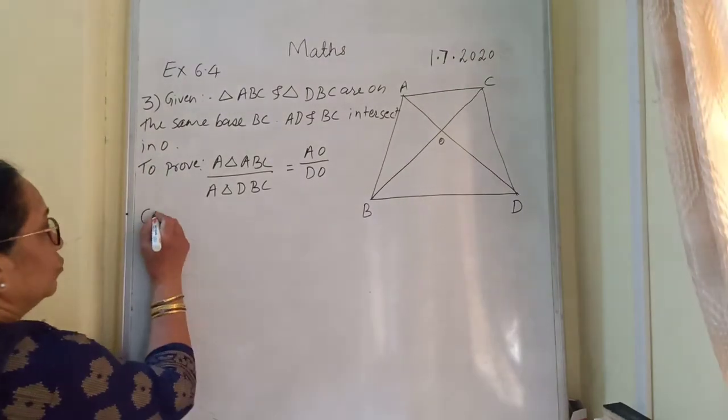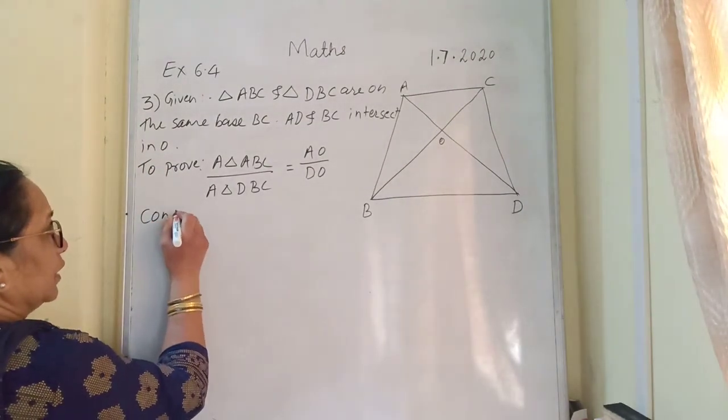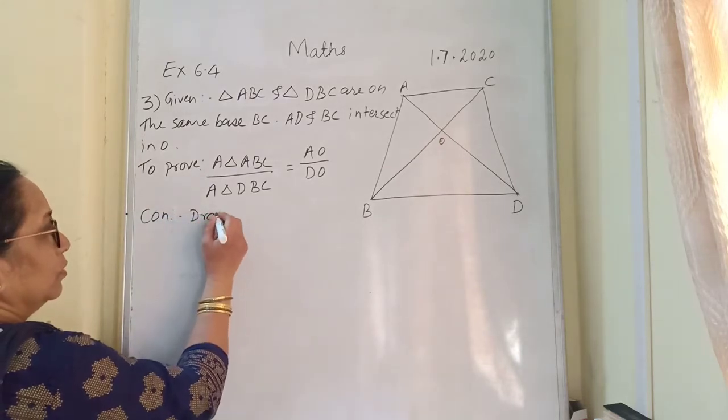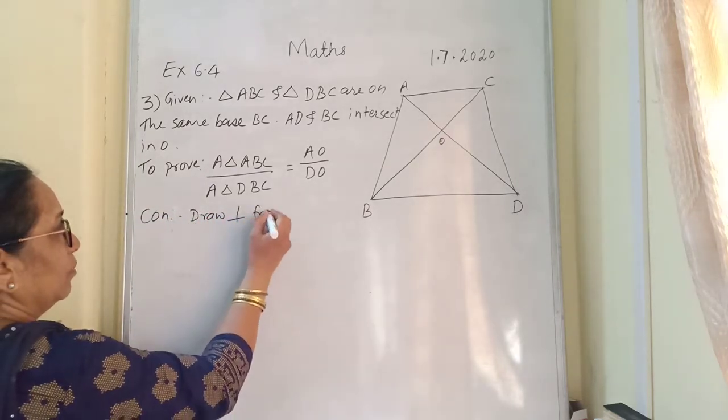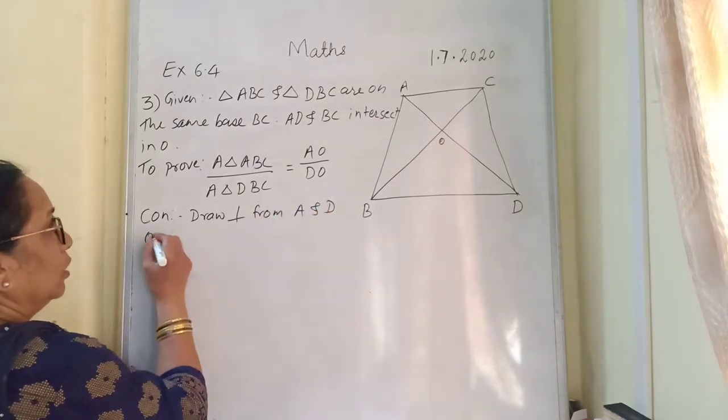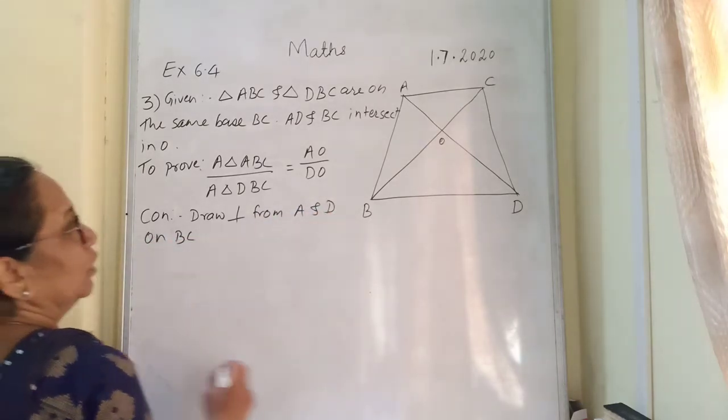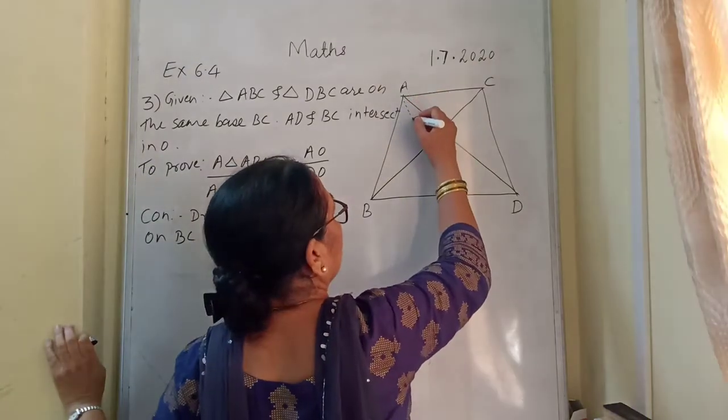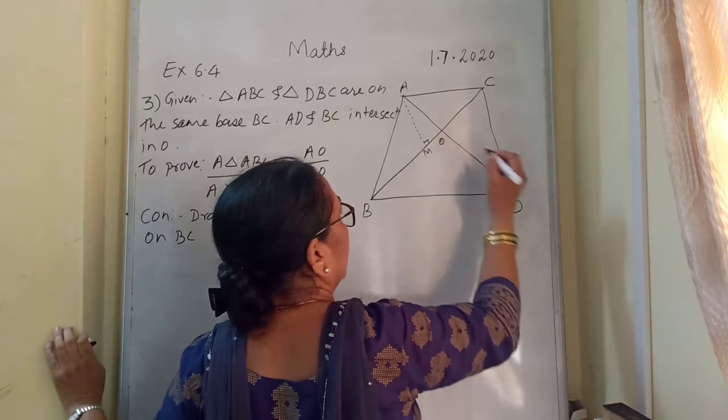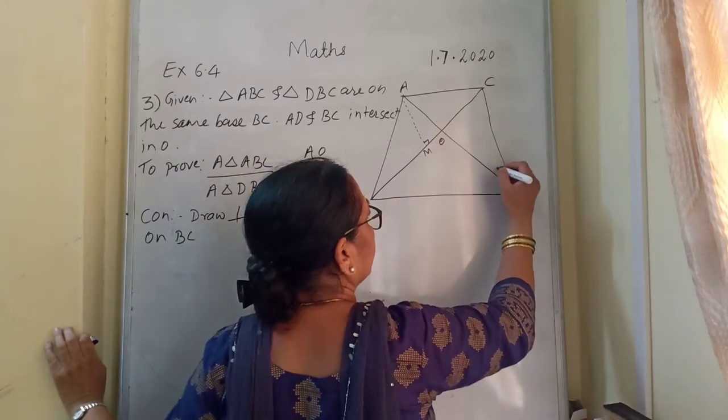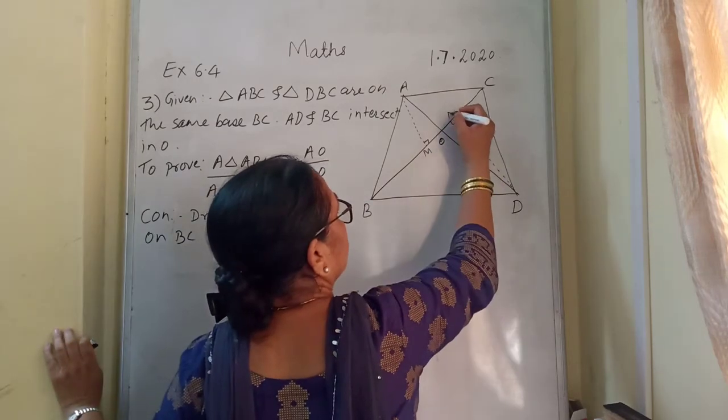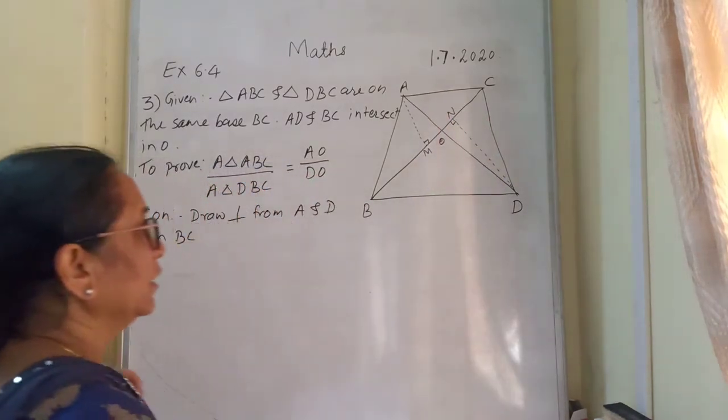Correct? Now construction we are going to do. Construction will be draw perpendiculars from A and D on BC. So we are going to draw the perpendiculars from A and D. This will be M, this will be N. Correct? On BC.